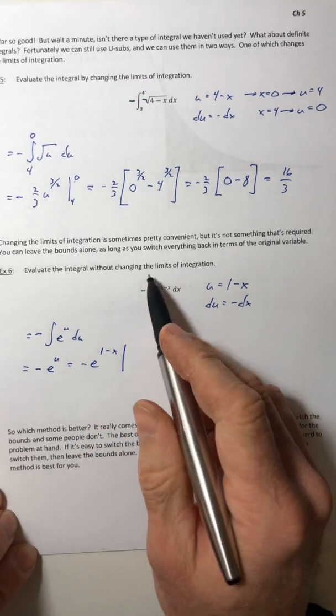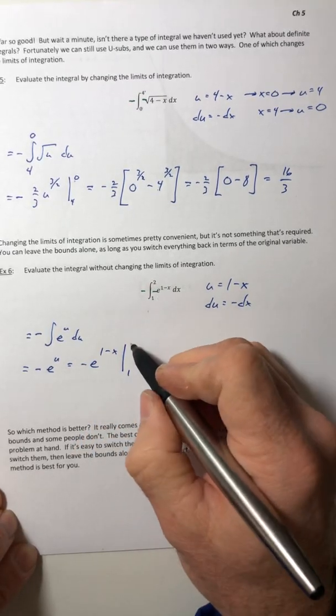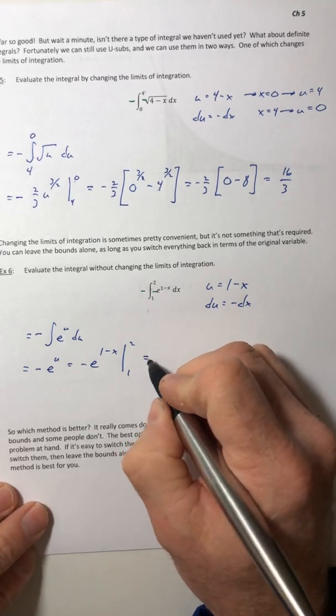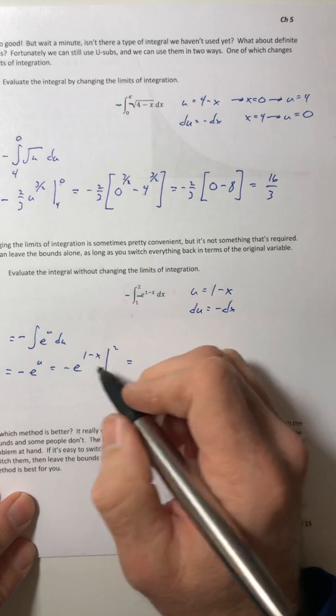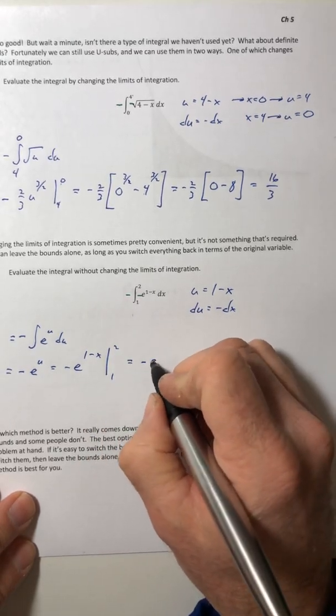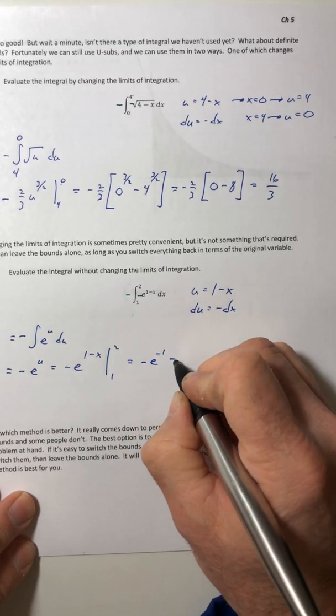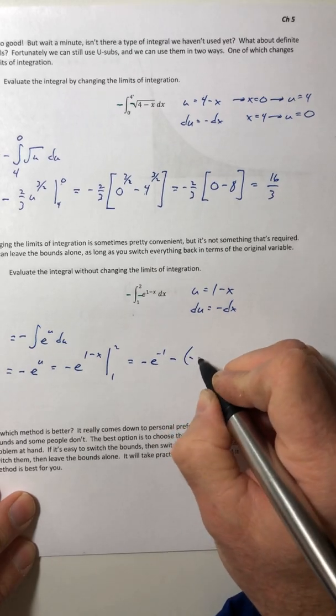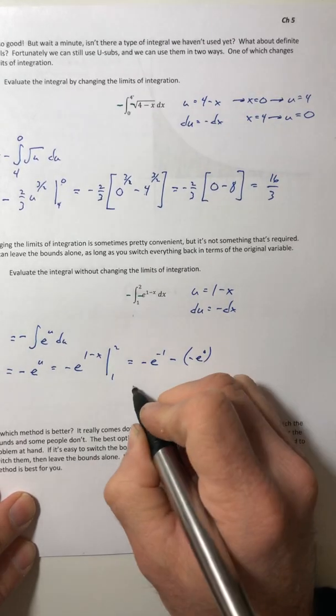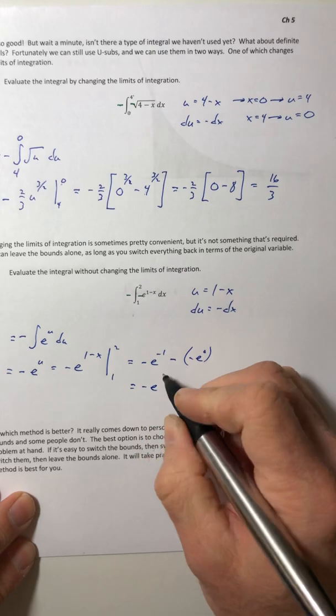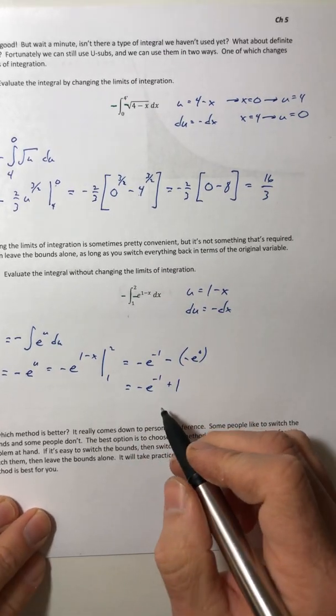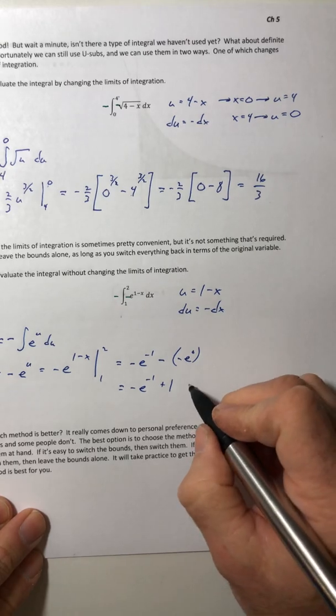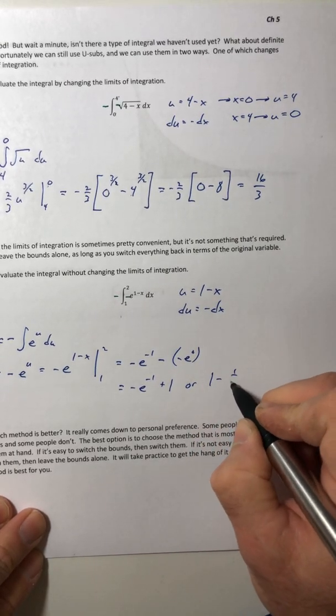And now you can throw in the old bounds that we had before, the one and the two, because they were in terms of x. Well, now it's in terms of x. So plug in the two, plug in the one, and negative e to the negative first plus one, or one minus one over e.